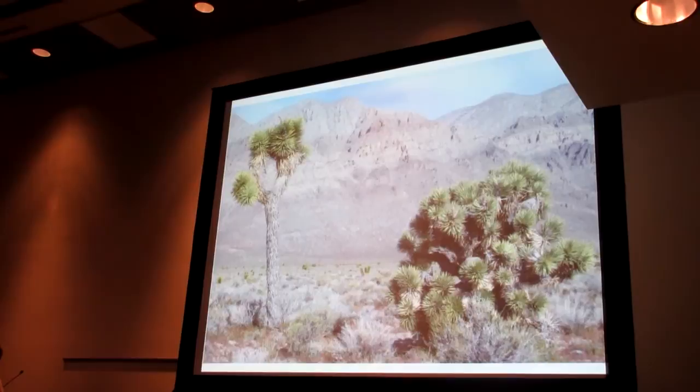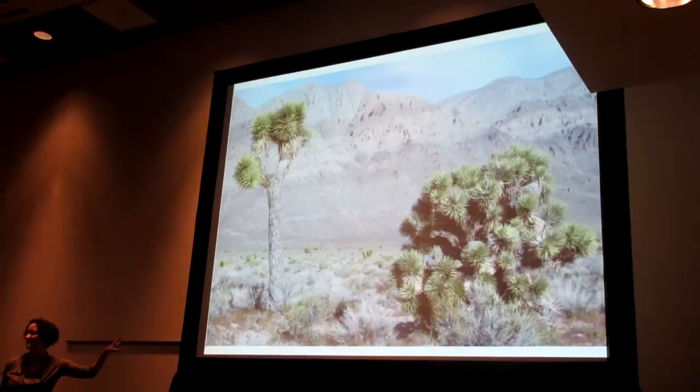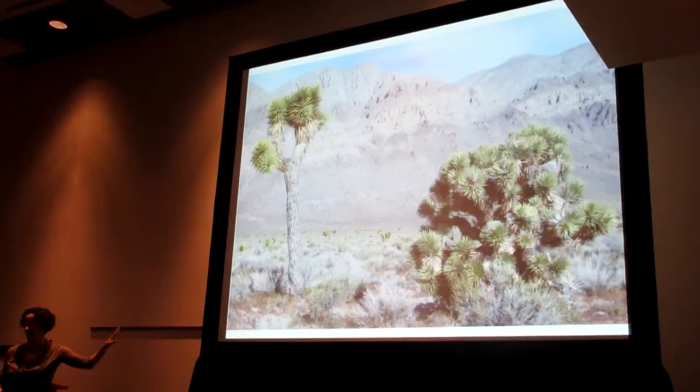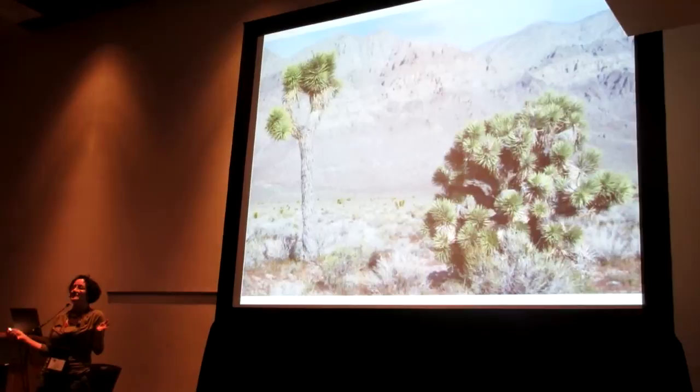The organisms I'm talking about today are Joshua trees. You're probably familiar with the Joshua tree on the left — it's got a long trunk and tall branching form. But there's actually also another species of Joshua tree on the right. So the classic Joshua tree, Yucca brevifolia, and this other species, Yucca jaegeriana.